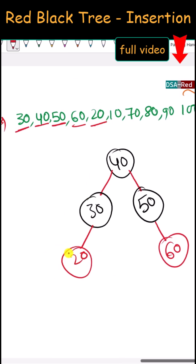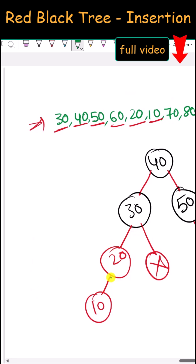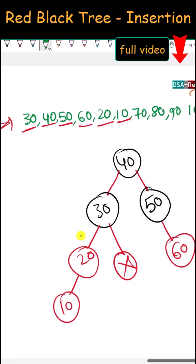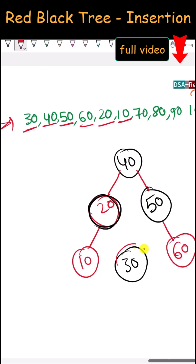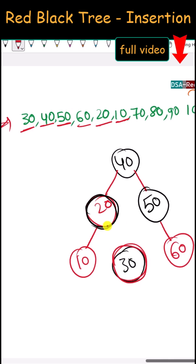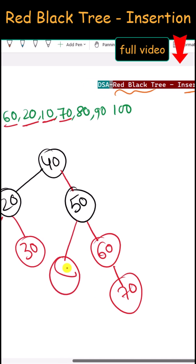Next we insert 20, placed here with no conflict. Then we insert 10, placed here, and we have a red-red conflict with no uncle. This is a left-left rotation, so we rotate right. Now 20 becomes black and 30 becomes red.